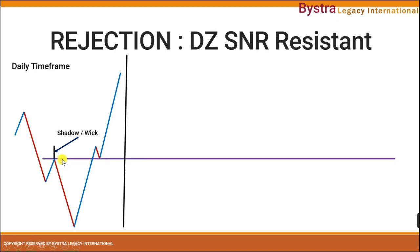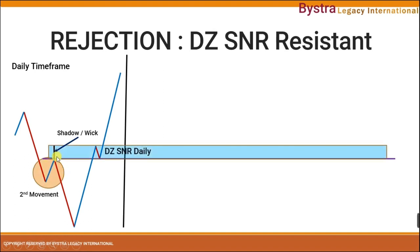First, we go to the line chart and mark the horizontal line. Then we mark this as our second movement. After that, we mark from the edge of the resistance all the way up to the shadow or the wick of the candlestick.